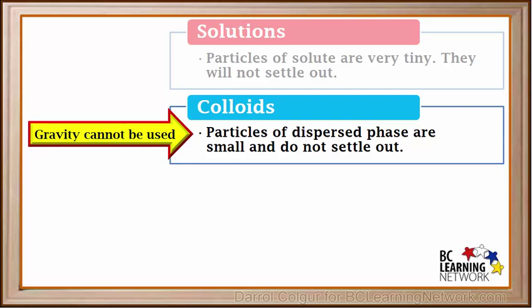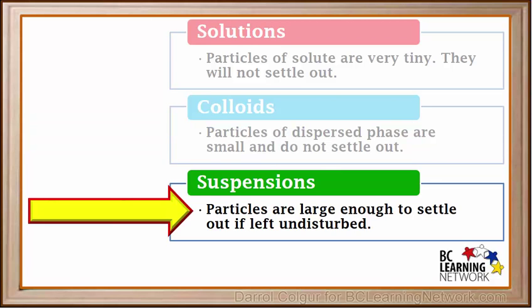For example, homogenized milk, which is a colloid, will not separate into cream and skim milk if left sitting. However, in a suspension, the particles are large enough to settle out, so gravity can be used to separate suspensions.